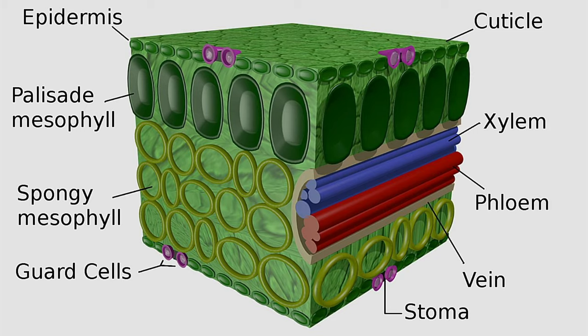A thin transparent covering on the upper epidermis of the leaf called the cuticle also contributes to losing excessive water. Transpiration which occurs through stomata is called stomatal transpiration, through lenticels is called lenticular transpiration, and through the cuticle is called cuticular transpiration.